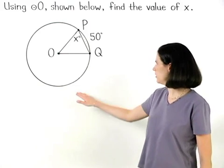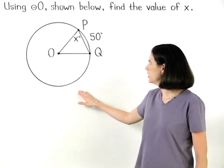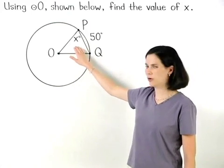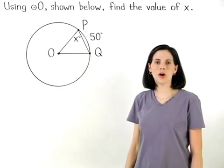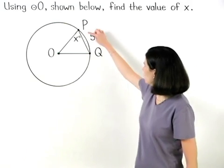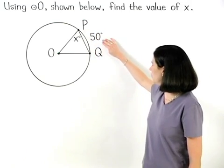In this example, we're given a diagram of circle O and we're asked to find the value of x. We're also given that the measure of arc PQ is 50 degrees.